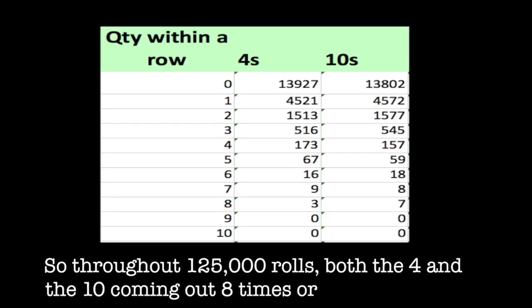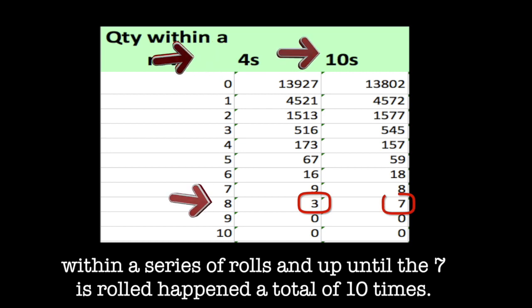So, throughout 125,000 rolls, both the four and ten coming out eight times, or rolling eight times within a series of rolls, up until a seven out, happened a total of ten times.